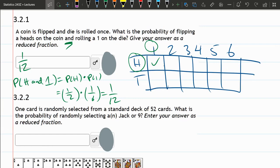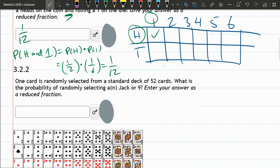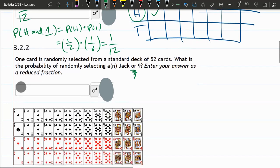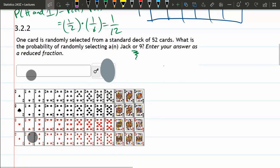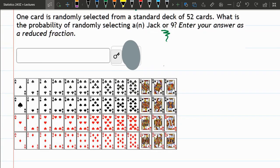All right. The next question is sort of similar, except it has the word OR in it. So now we're going to think about adding probabilities if they're mutually exclusive. We're looking at decks of cards. Probability selecting a jack or a 9. Here's the jacks. Here's the nines. And there's 4 and 4.